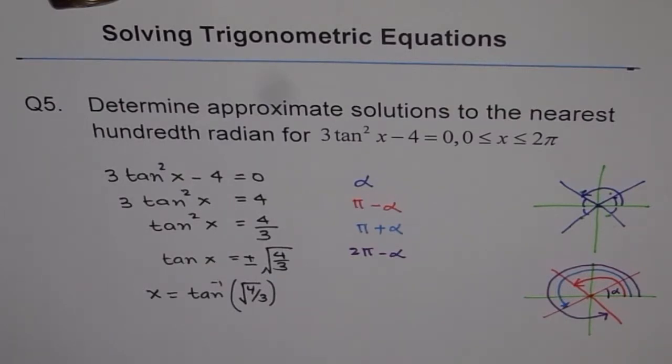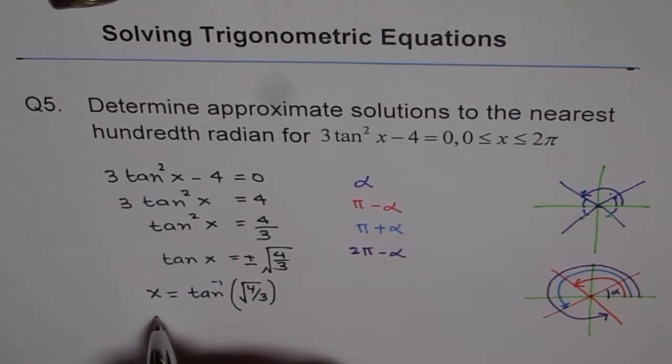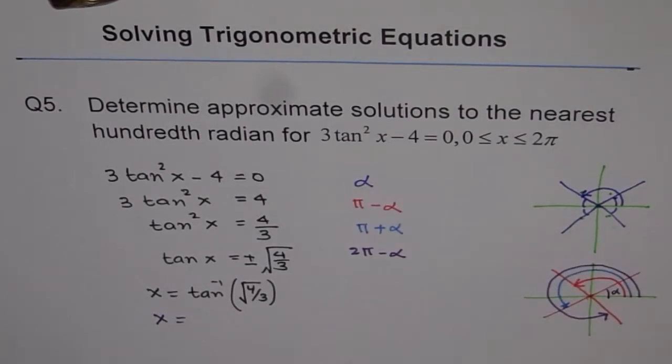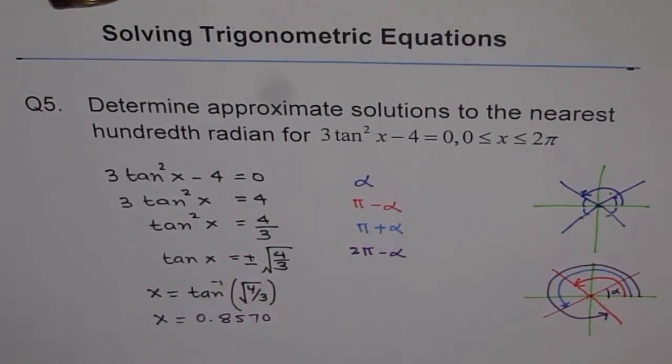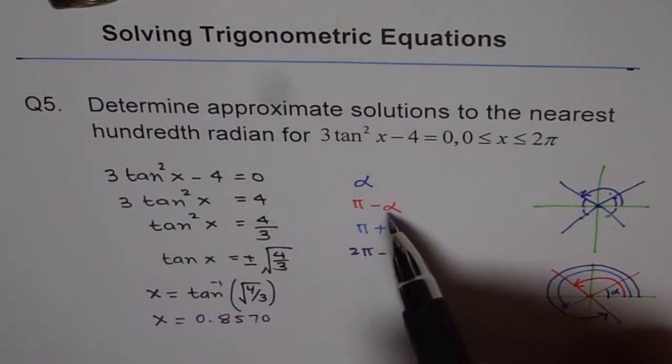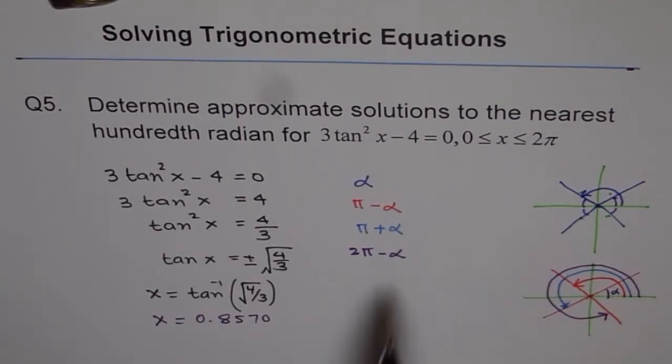Let's do square root of 4 divided by 3 and we get some number and we will do tan inverse of this. Tan inverse of this function gives us the answer, right here, alpha x which is also one of our solutions. Therefore I am using x here: 0.8570. Now that is our angle alpha and that is one solution to this.